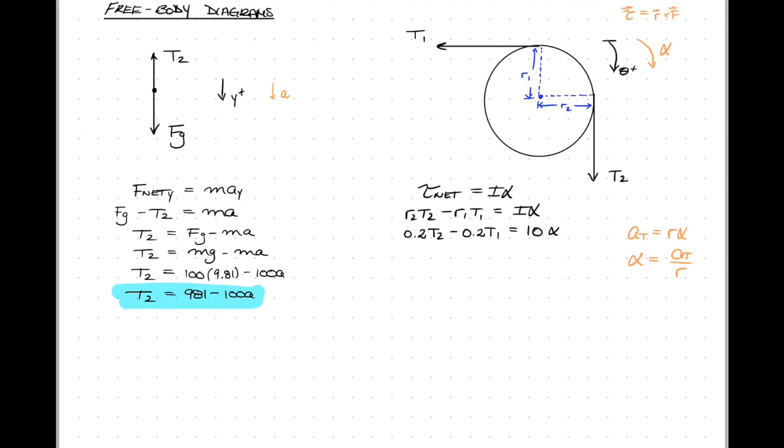Alright, so the only thing left to consider is what is our angular acceleration. We'll recall that angular acceleration is simply the tangential acceleration divided by the radius of the circle. In this case, the tangential acceleration will be the a we have been using this entire time. In other words, it is the acceleration of the block, rope, counterweight system moving past or moving over the pulley itself. So we can replace alpha with a over r. And that's it!